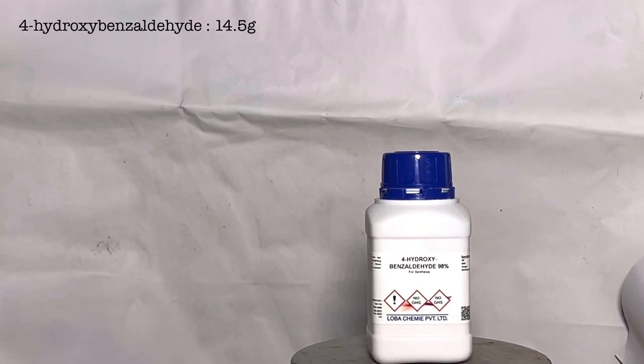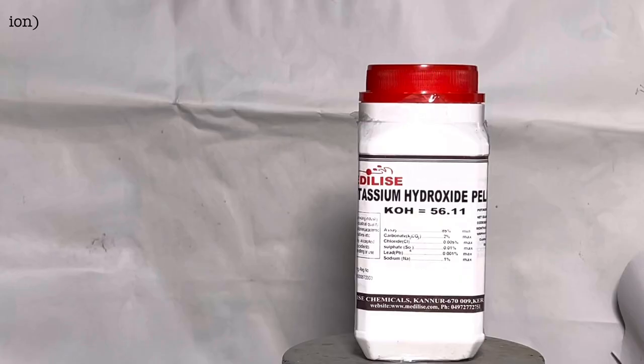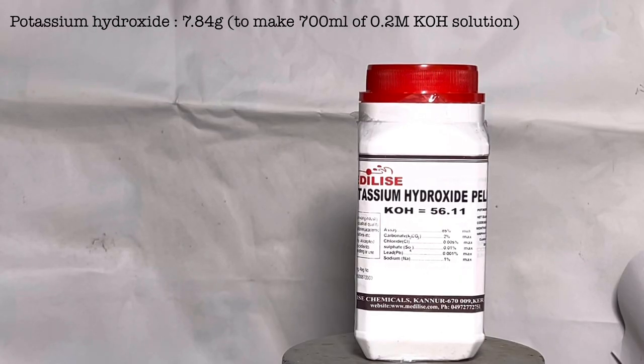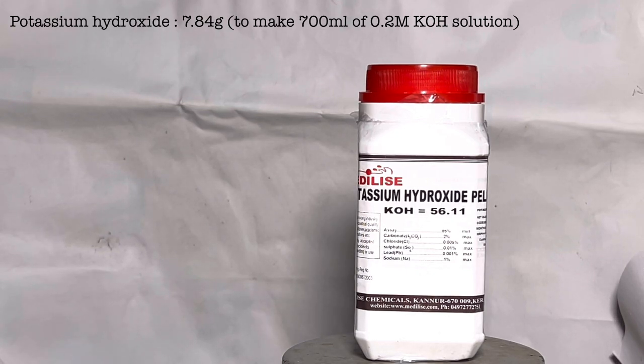We also need 14.5 grams of 4-hydroxybenzaldehyde, 20 milliliters of dry isopropanol, and 7.84 grams of potassium hydroxide pellets to make 700 milliliters of a 0.2 molar solution.